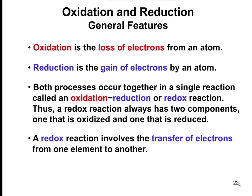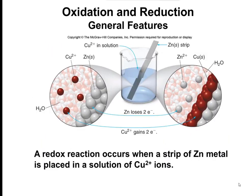It's probably even more accurate to say it always has at least two components — it can have more — but there are always going to be a component that's oxidized and one that's going to be reduced. Here's an example of a reaction, and this is actually something our students do in a general chemistry lab. If you have copper 2+ ions in a solution of water...